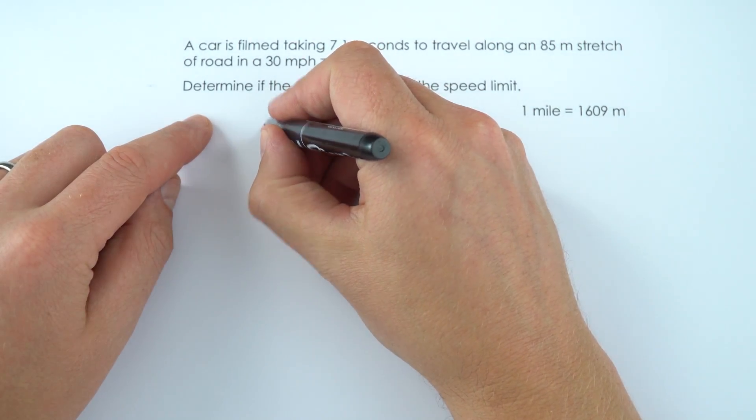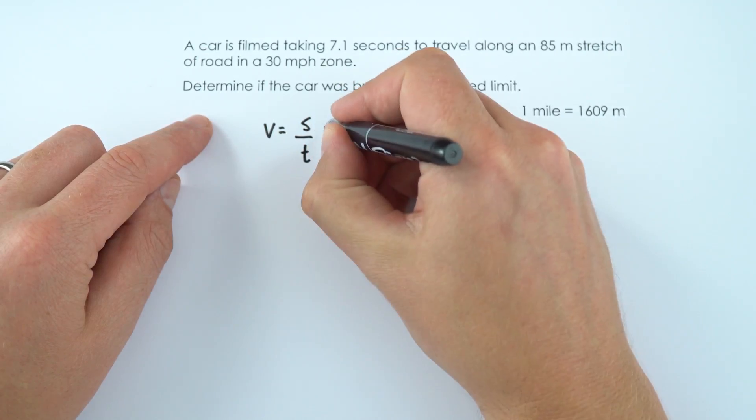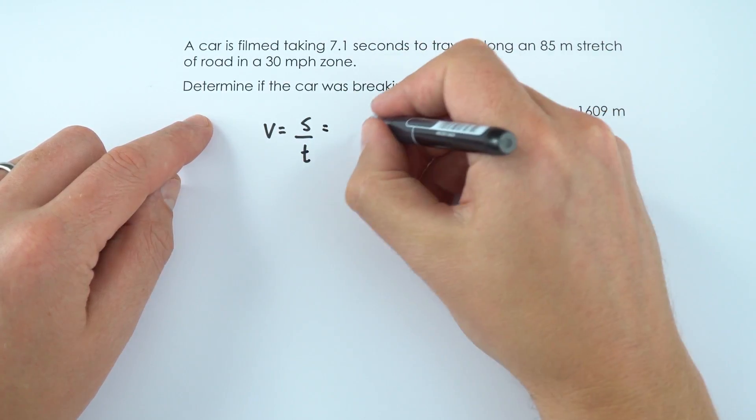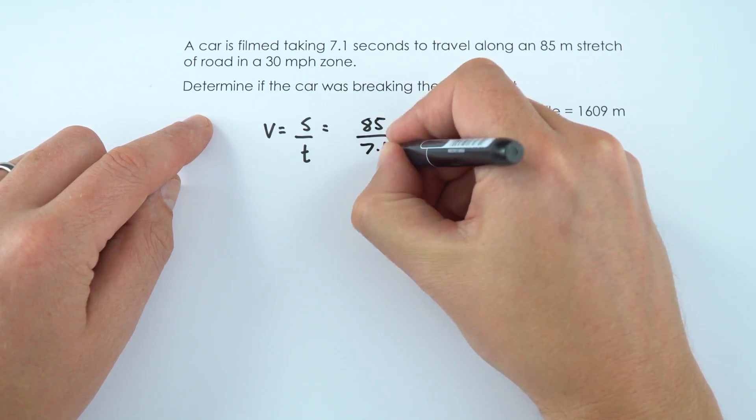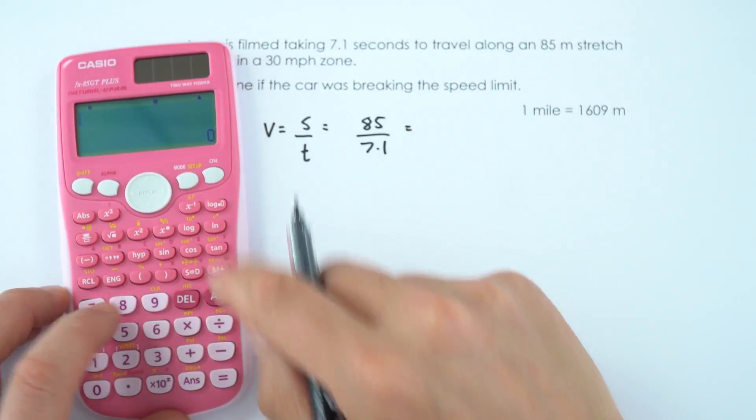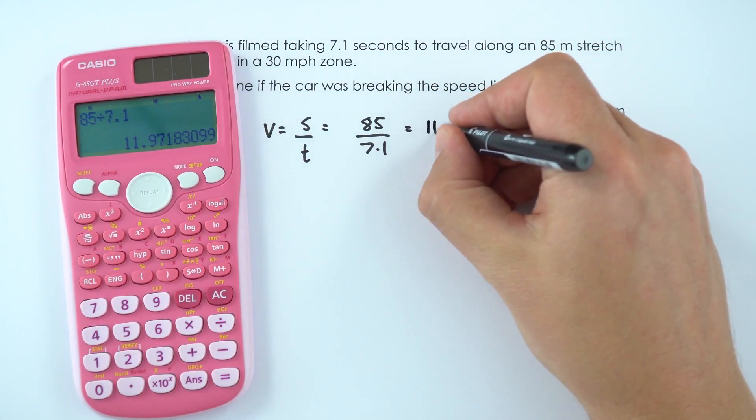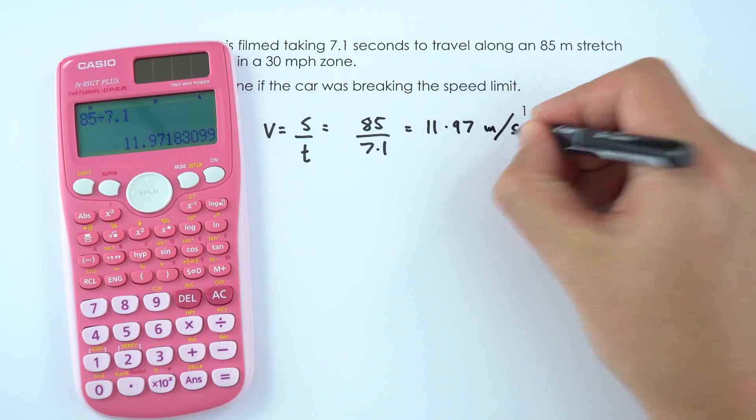First we're going to work out the speed of that car using the equation that speed equals distance divided by time. The distance is 85 metres and the time is 7.1 seconds. When we work out the speed in metres per second, 85 divided by 7.1 equals 11.97 metres per second.